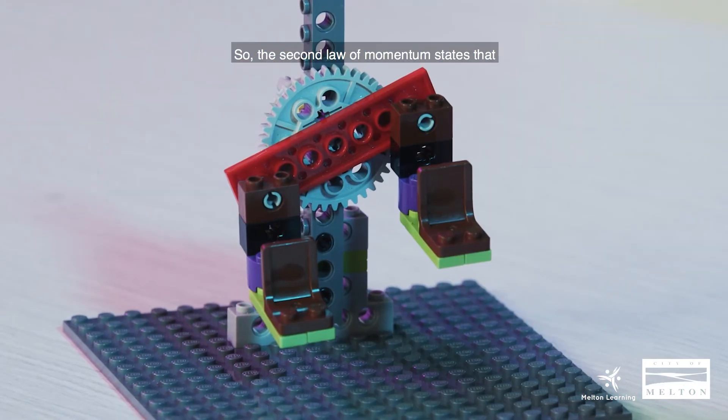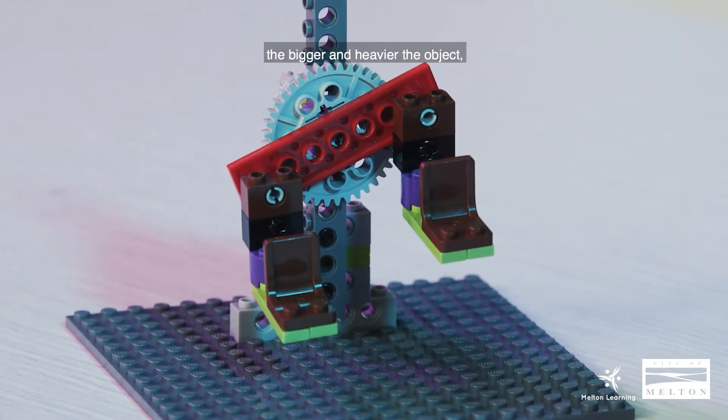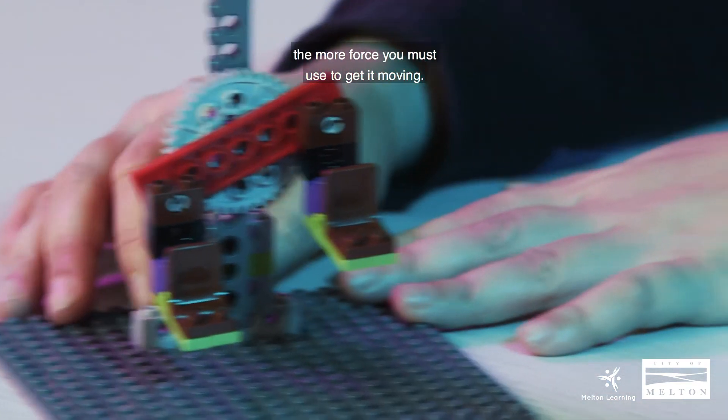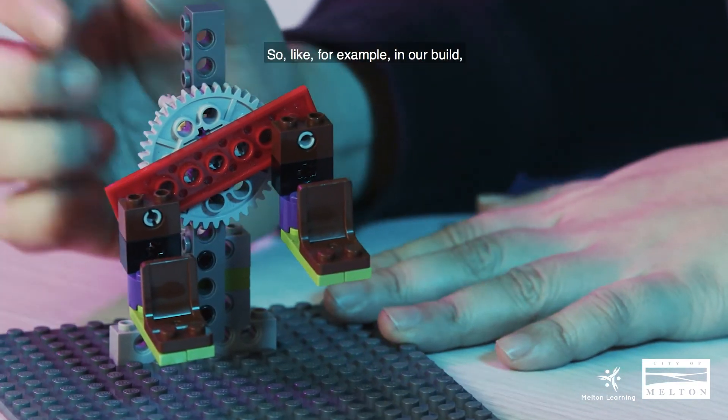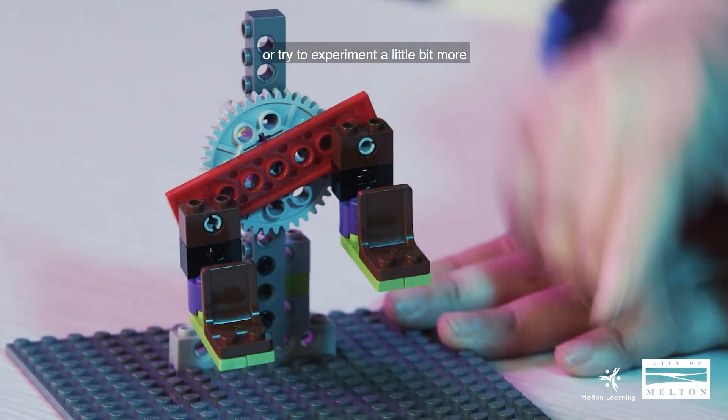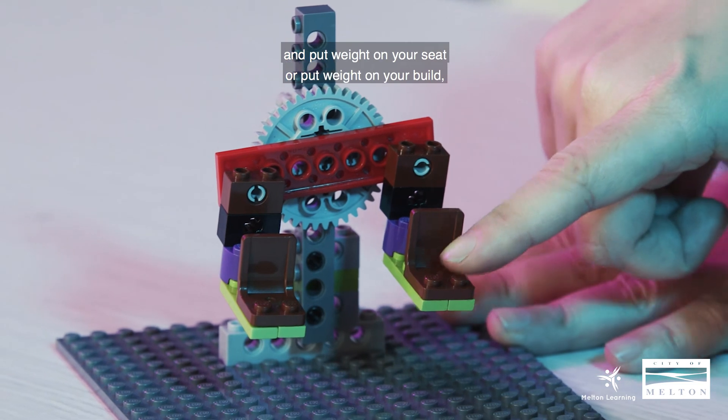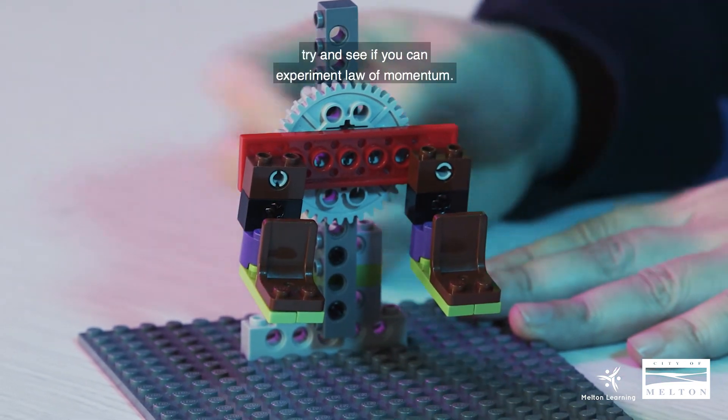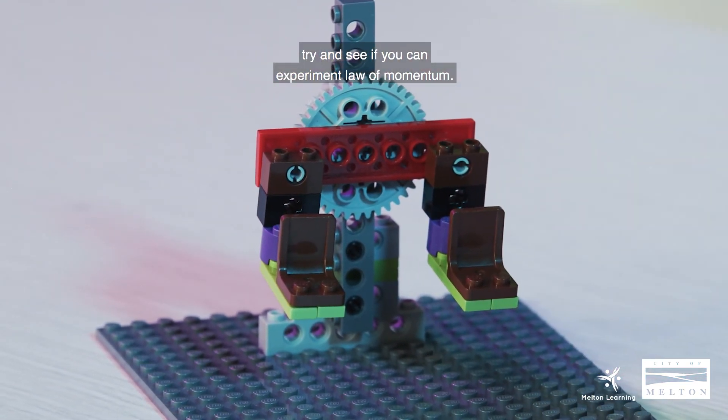The second law of momentum states that the bigger and heavier the object, the more force you must use to get it moving. So for example, in our build, you want to attach your motor and battery to this, or try experiment a little bit more and put weight on your seat or put weight on your build. Try and see if you can experiment law of momentum.